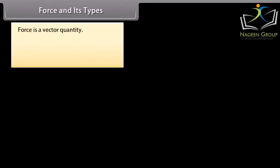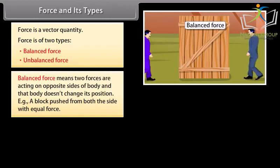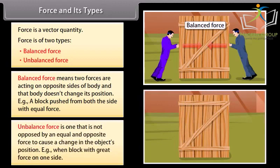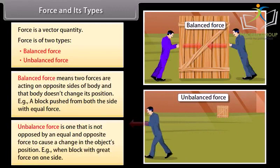Force is a vector quantity. Force is of two types, balanced and unbalanced. Balanced force means two forces are acting on opposite sides of the body and that body does not change its position. Example: a block pushed from both sides with equal force. Unbalanced force is one that is not opposed by an equal and opposite force to cause a change in the object's position.